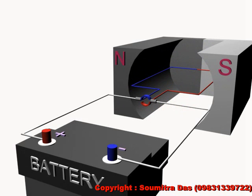After half rotation, the direction of current reverses. That is, this part of the commutator is now connected to the positive terminal. Applying Fleming's left hand rule again, we get the direction of force.